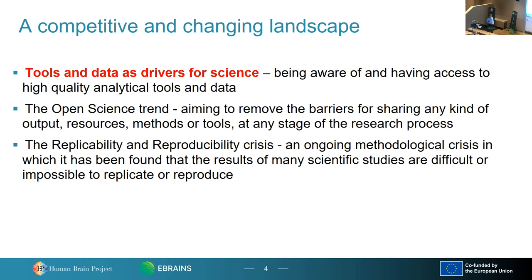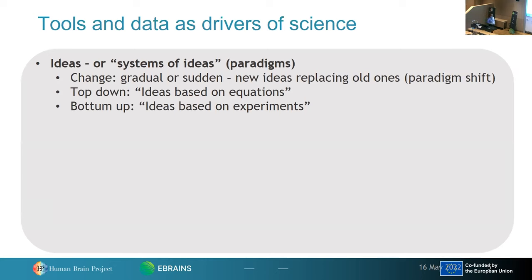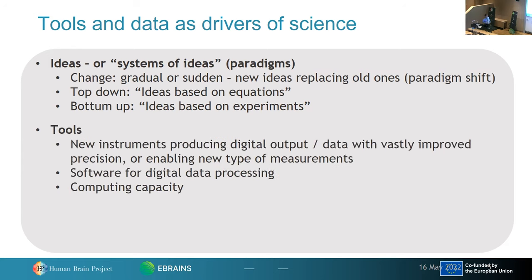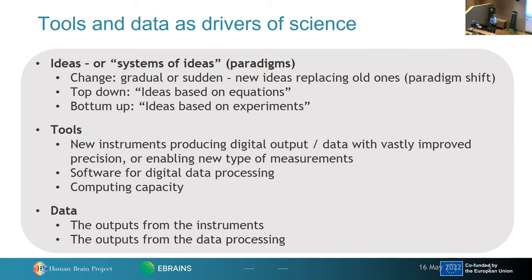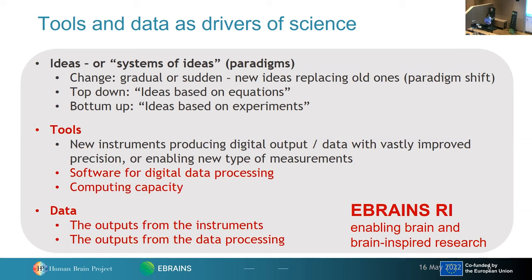Let's first take a look at tools and data as drivers for science. We often think of ideas or paradigms as drivers of science — top-down from hypotheses that come from equations in some cases, or bottom-up ideas based on experiments. But tools are also drivers. For example, a new data acquisition instrument that acquires data you've never been able to get before will drive your science. The same with powerful software processing and computing capacity. The data and outputs from instruments and data processing are also seen as drivers for science. In this landscape, the eBrains research infrastructure contributes with aspects related to tools, software, computing capacity, and data.